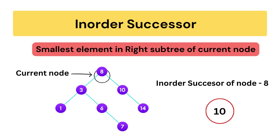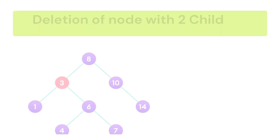Now let's find the in-order successor of node 8. The in-order successor is the smallest element in the right subtree of the current node. The in-order successor of node 8 is 10.